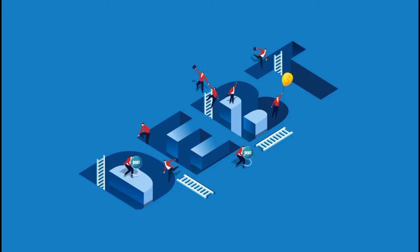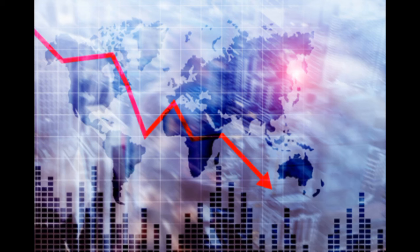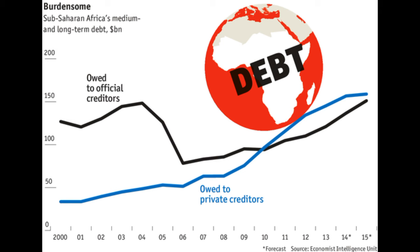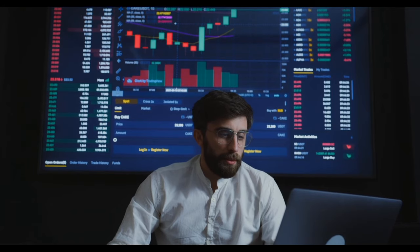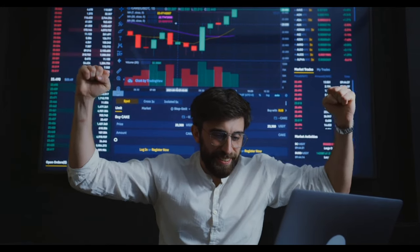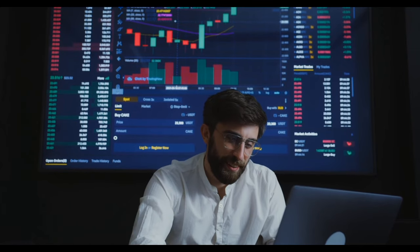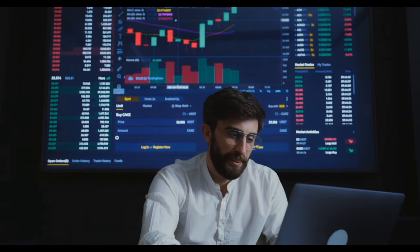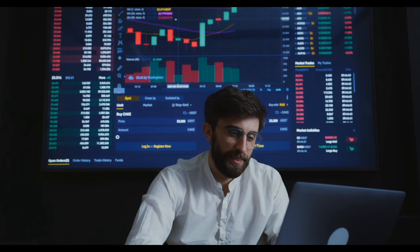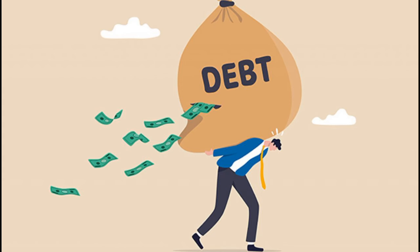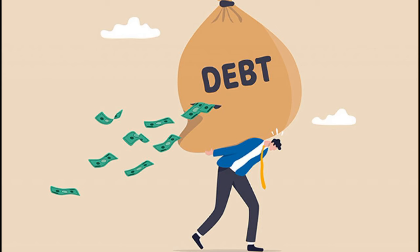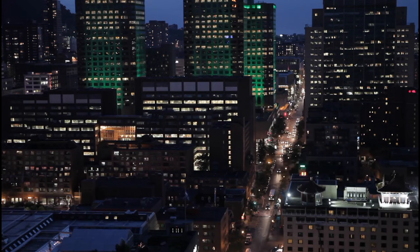Number 5: Debt Crisis. The collapse of the USD could lead to widespread debt crises, particularly for countries heavily reliant on USD-denominated debt. As the value of the USD plummets, servicing and repaying existing debt becomes more challenging. Nations that borrowed extensively in USD could face escalating debt burdens, potentially triggering a chain reaction of financial instability. Countries with high external debt, particularly in developing regions, might experience difficulties repaying loans and servicing interest payments. Credit rating downgrades could follow, making it harder and more expensive to access international financial markets. This, in turn, could exacerbate economic challenges, leading to a cycle of declining creditworthiness and increasing debt distress.